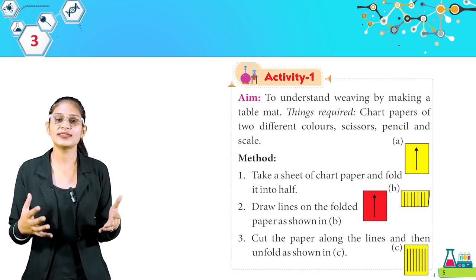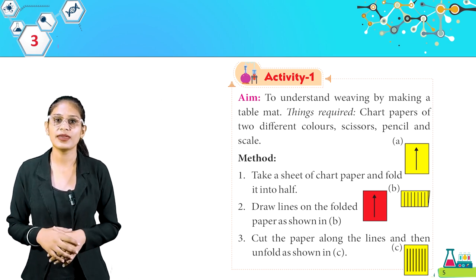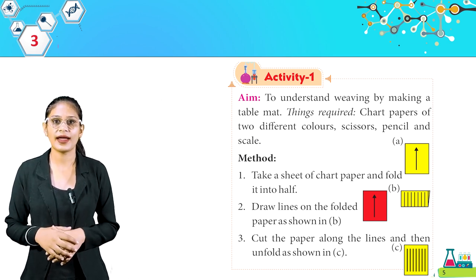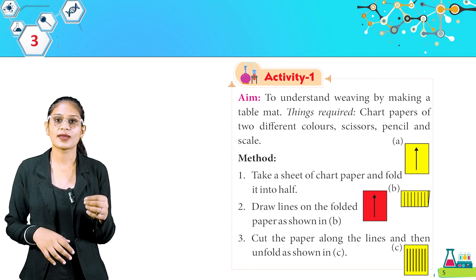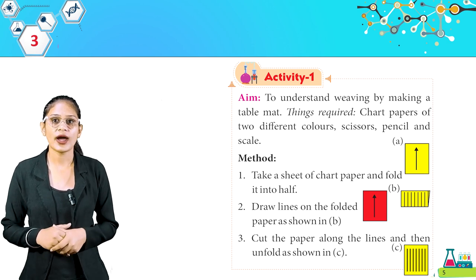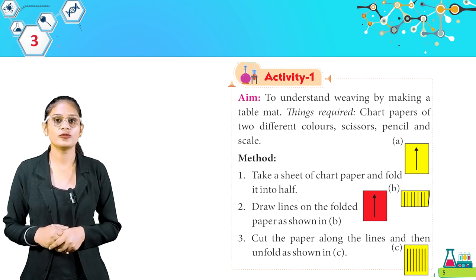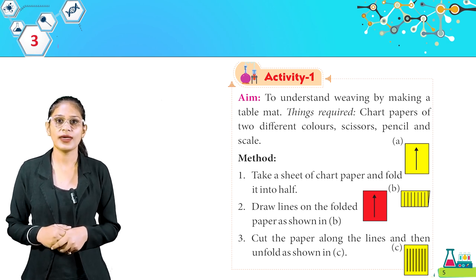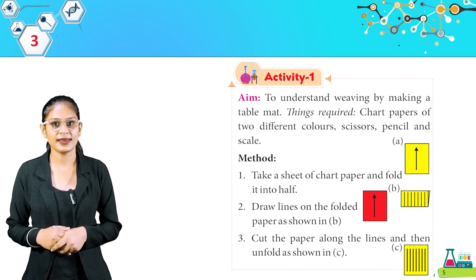Here is Activity 1. The aim is to understand weaving by making a table mat. Things required: chart papers of two different colors, scissors, pencil, and scale.